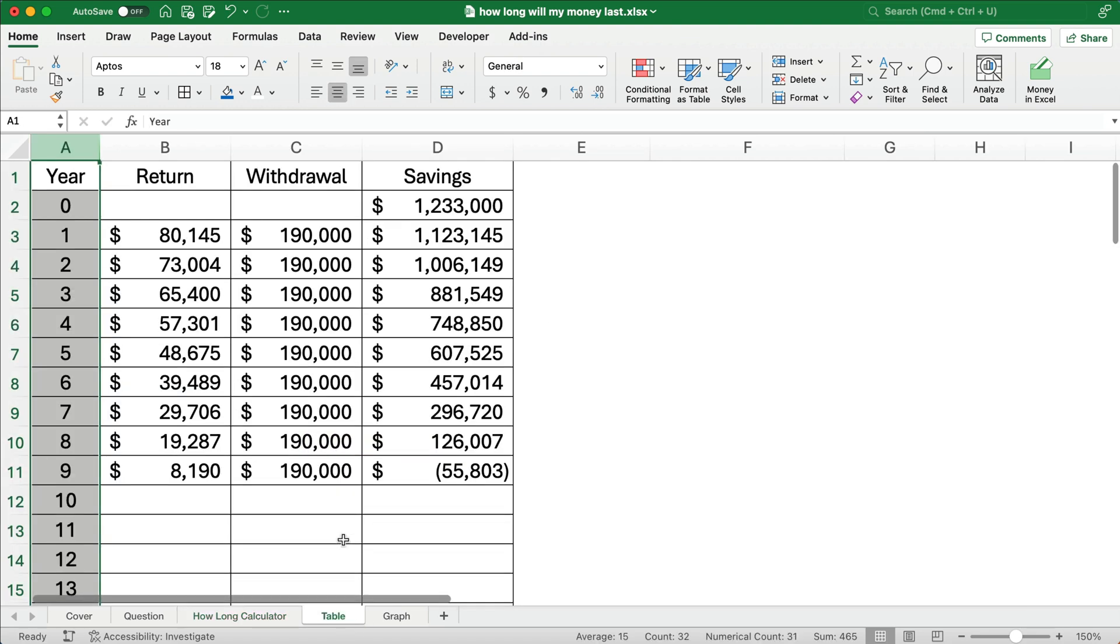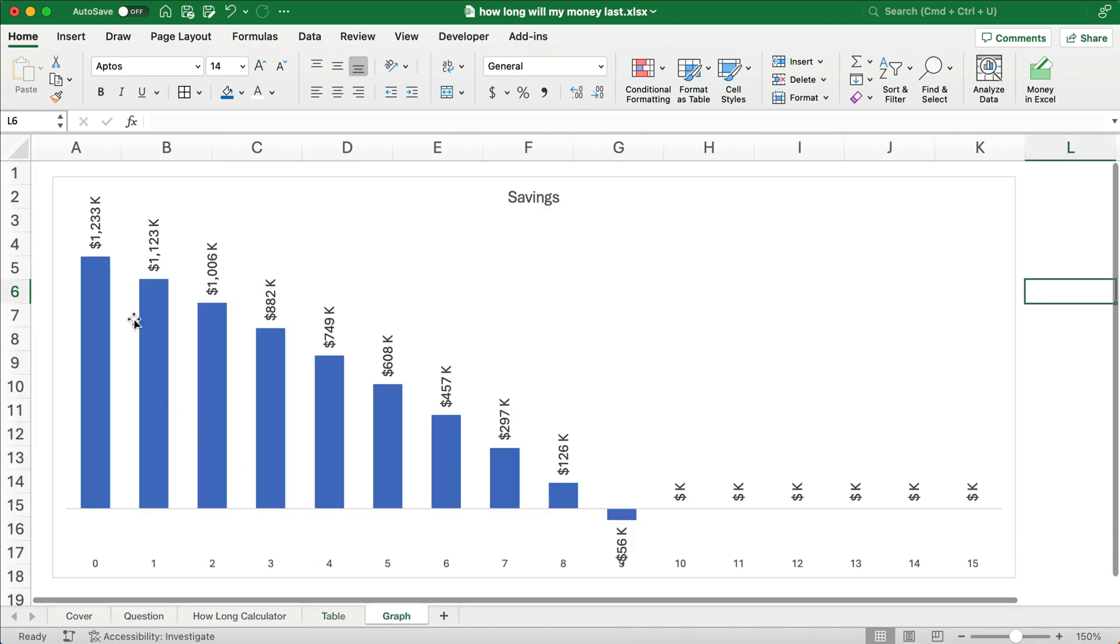What I've also done is I've shown how this works. If you start with $1,233,000 and you take out $190,000, you've got a little bit of return along the way. Then at the eighth year, you'll have an end of the year $126,000. You might be able to earn an extra $8,190. So you're going to be able to take out $134,000, not the full $190,000. You've got eight full years and then the ninth year would be a partial year. If you want to see it on a graph, here's what happens. It slowly goes to zero in year nine.